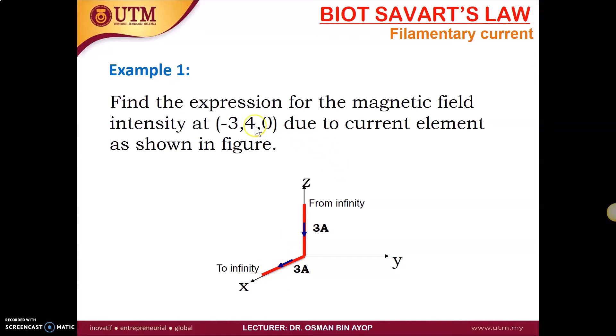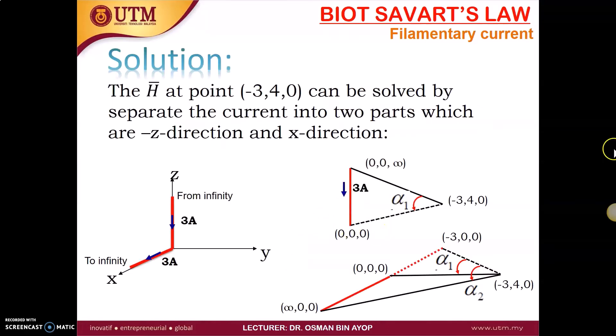So we have to know where is this point is. This is X, Y, Z, so negative 3, 4, negative 3 here, 4 is here, around this point. Okay, so for the solutions, the H at point negative 3, 4, 0 can be solved by spread the current into two parts, which are negative Z direction and also X directions.